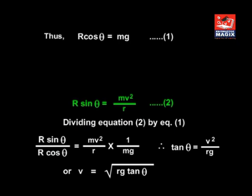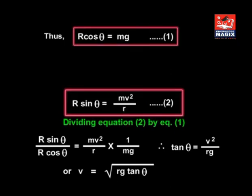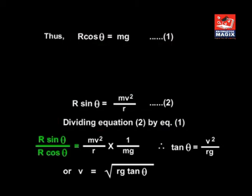So, R sin θ = mv² / r. Dividing equation 2 by 1, we get R sin θ / R cos θ = (mv² / r) × (1 / mg). Therefore, tan θ = v² / rg, or v = √(rg tan θ).